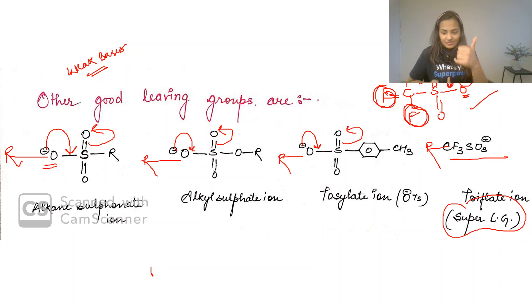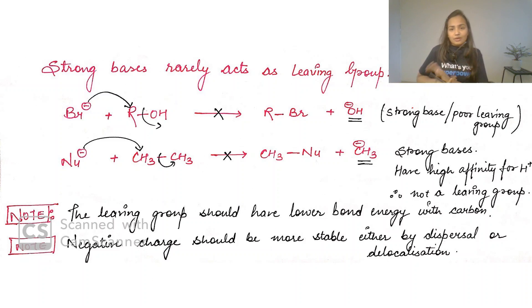Resonance makes the negative charge less available, converting our group into a good leaving group. This is one factor. Now let me discuss a reaction. If I have an alkyl alcohol and I react it with bromine, you might think R-Br should form and OH should leave. Will this reaction occur?